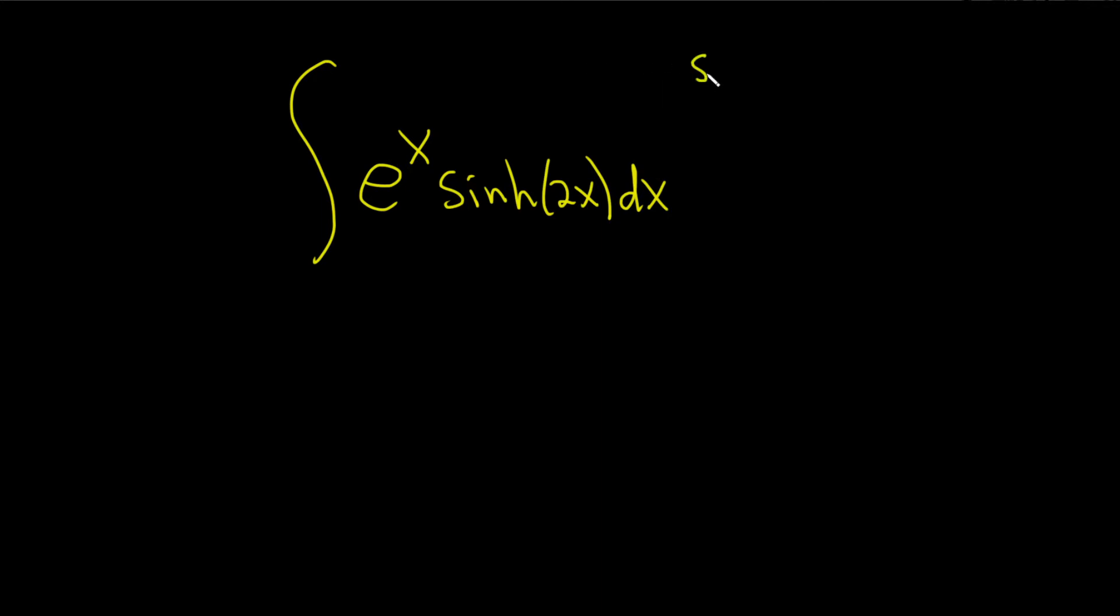Sinh of x is equal to e to the x minus e to the negative x, all being divided by 2. That's the formula for the hyperbolic sine. So let's go ahead and use this formula here in this problem and see if we can clean stuff up.